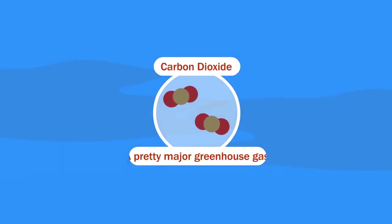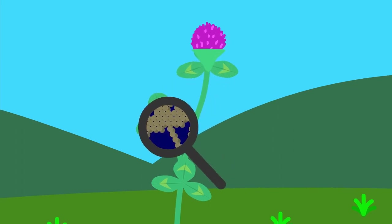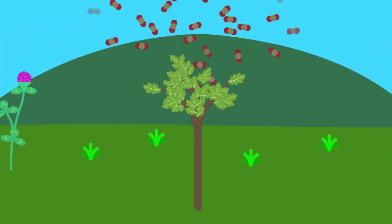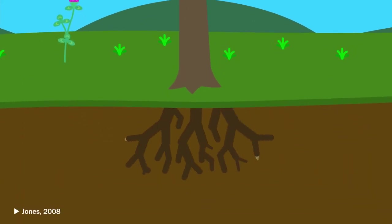You know how carbon is a pretty major greenhouse gas? Well, plants are made mostly of carbon. Not only does their growth directly take carbon out of the atmosphere, but lots of it goes underground, taking the form of their roots, as well as carbon-containing compounds the roots exude.